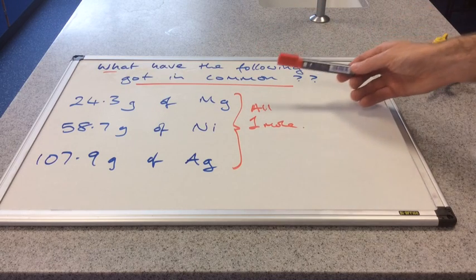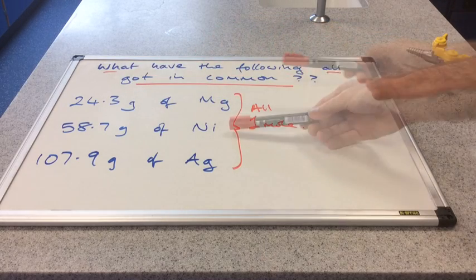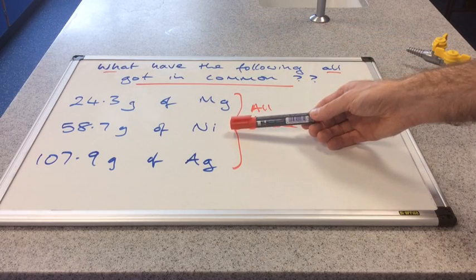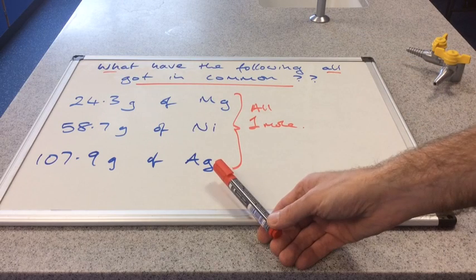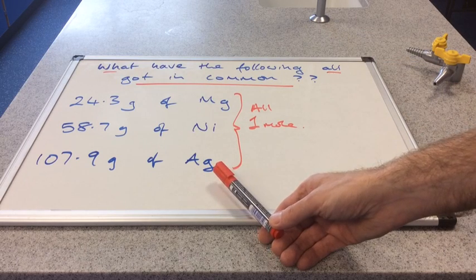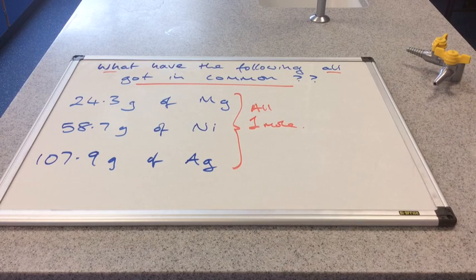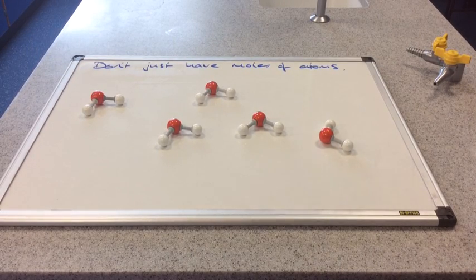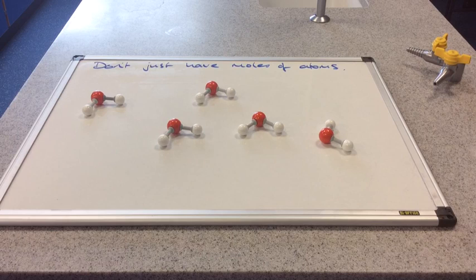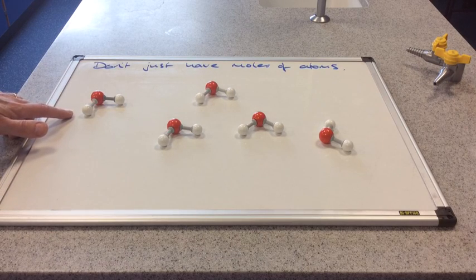So we would have Avogadro's number of magnesium atoms in there. In the 58.7 grams of nickel, we'd have Avogadro's number of nickel atoms. And in the 107.9 grams of silver, we'd have Avogadro's number of silver atoms. Now you don't just have moles of atoms, you can have moles of anything really, but these are molecules now. These are water molecules. You can have a mole of water molecules.